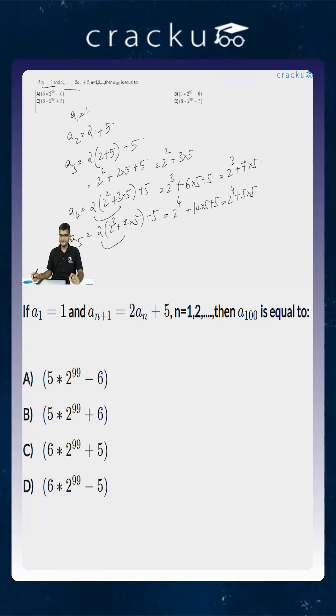If you look at the coefficients of 5, first you have 1, then 3, then 7, then 15. Clearly these are 1 less than a power of 2.